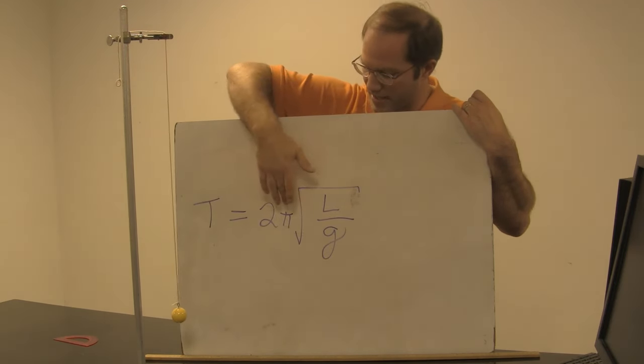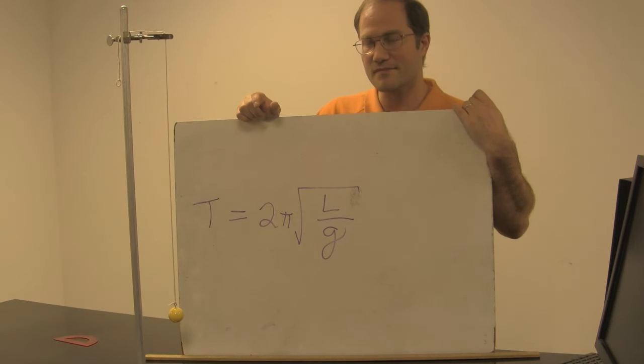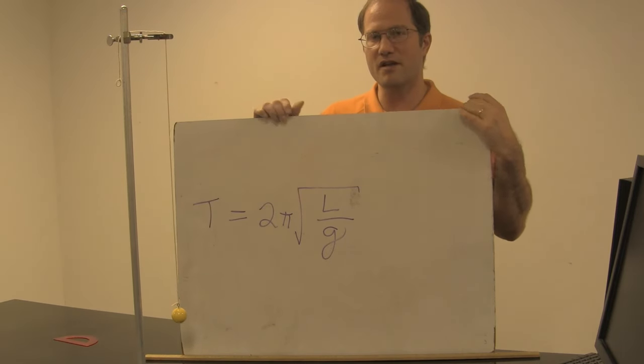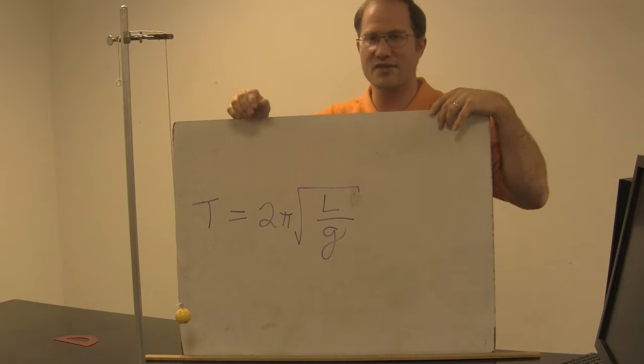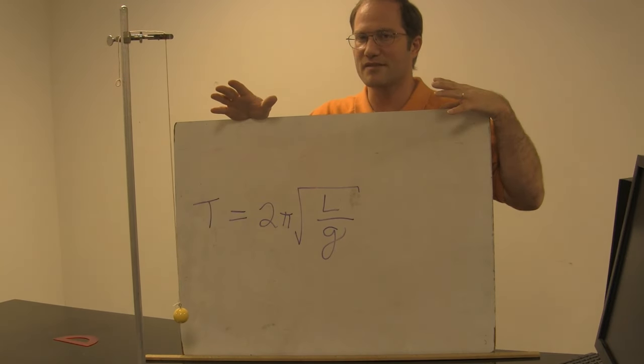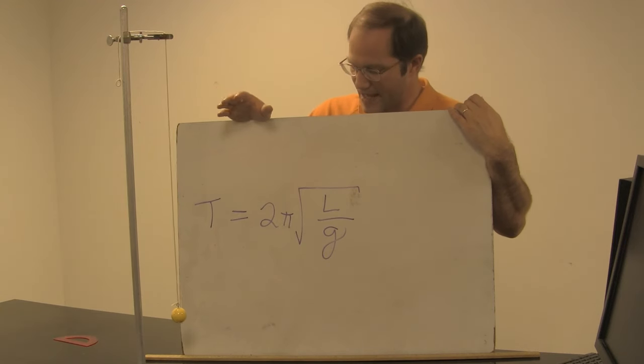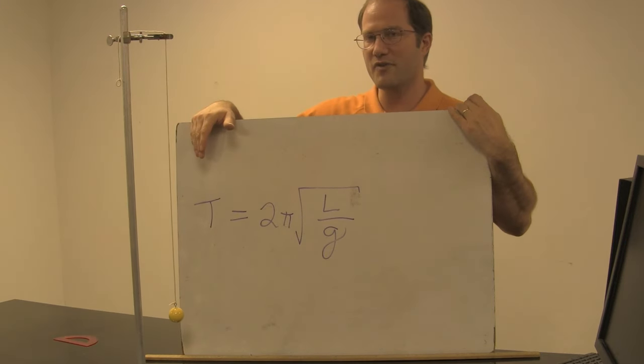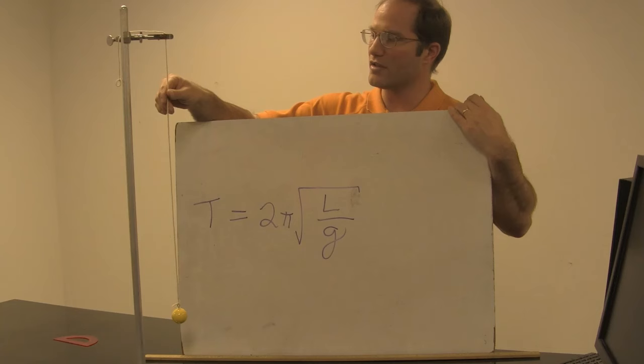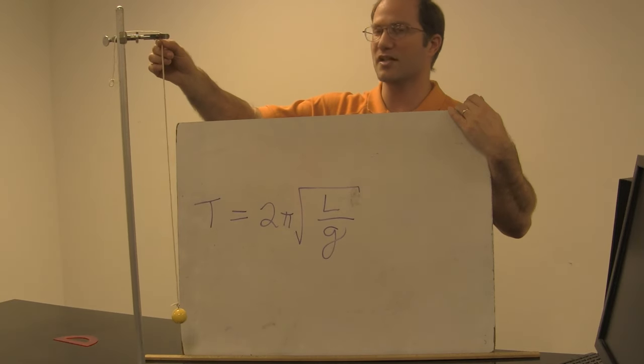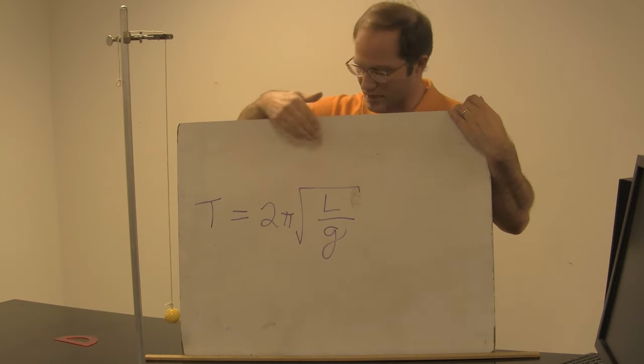So let's say you're on a planet that's not the earth and has a different g. Or maybe you just want to confirm the value of g here in Boone, North Carolina. And you want to perform an experiment where you graphically examine the relationship between t squared and l.